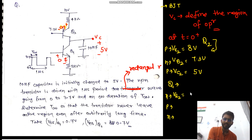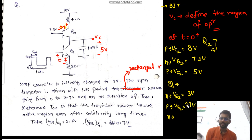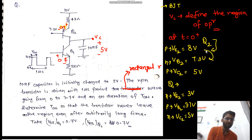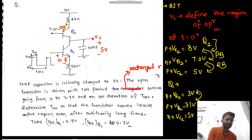For Q1 (NPN): VE2 is at 3V, VB2 is at 3.7V, and VC2 is at 5V. So the emitter-base junction is in forward bias, and the base-collector junction is in reverse bias, because P is at less positive potential. For Q2: this junction is in forward bias — N is at less positive and P is at more positive — and the collector junction is in reverse bias because N is at more positive.